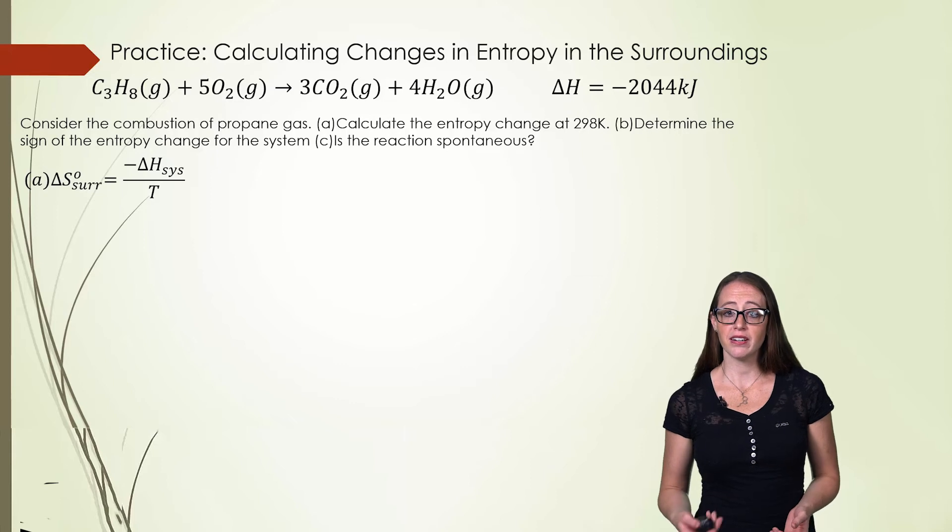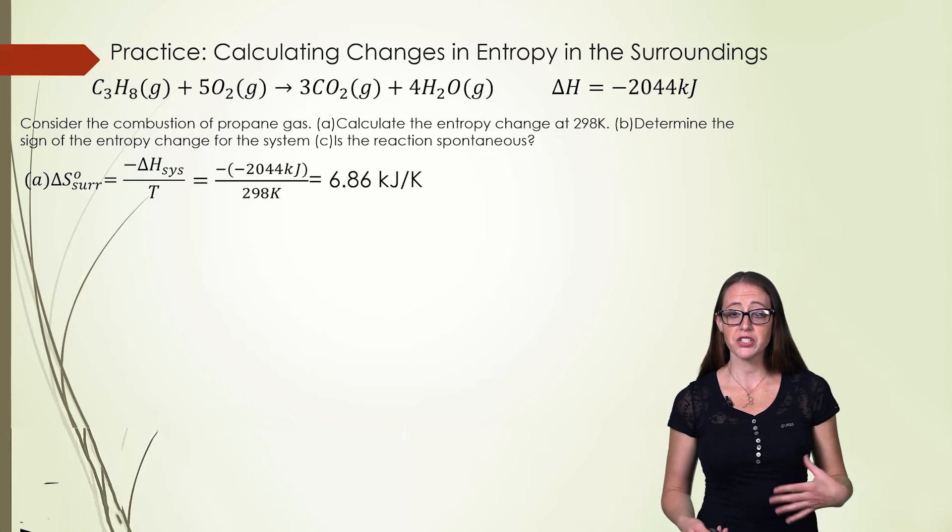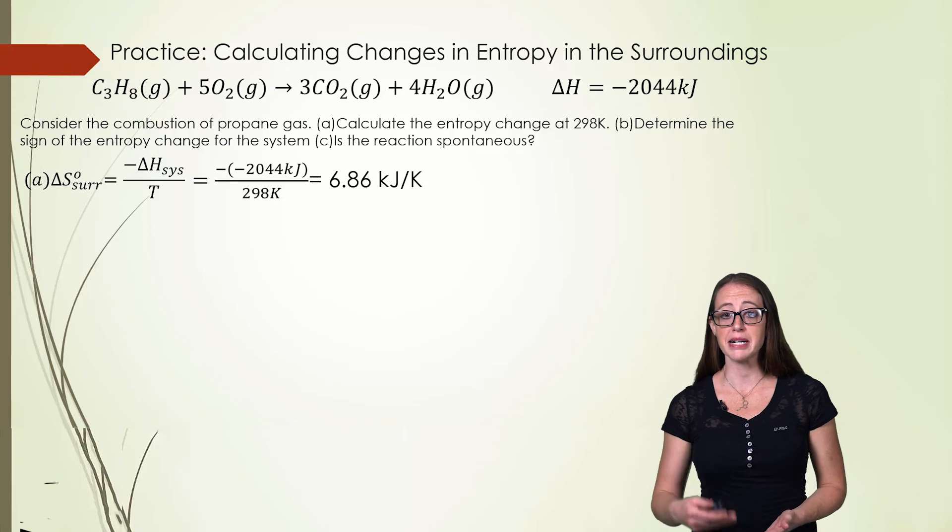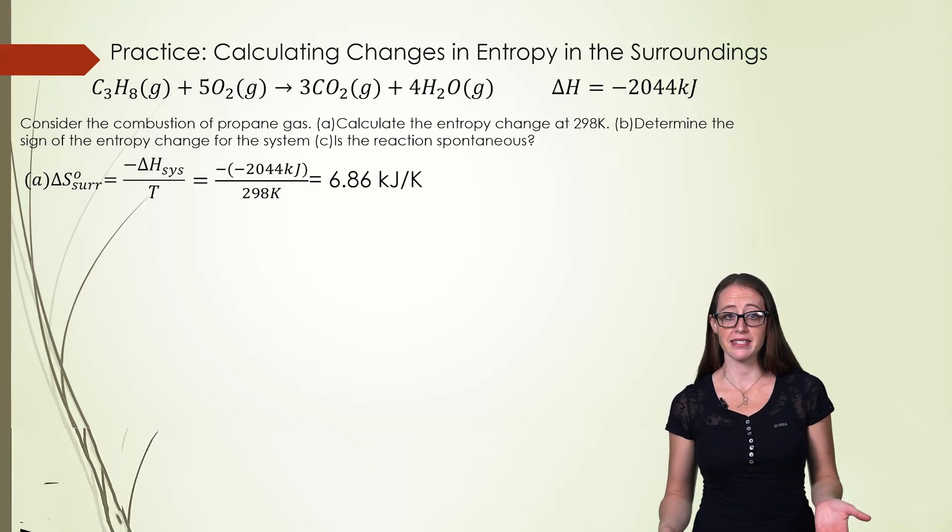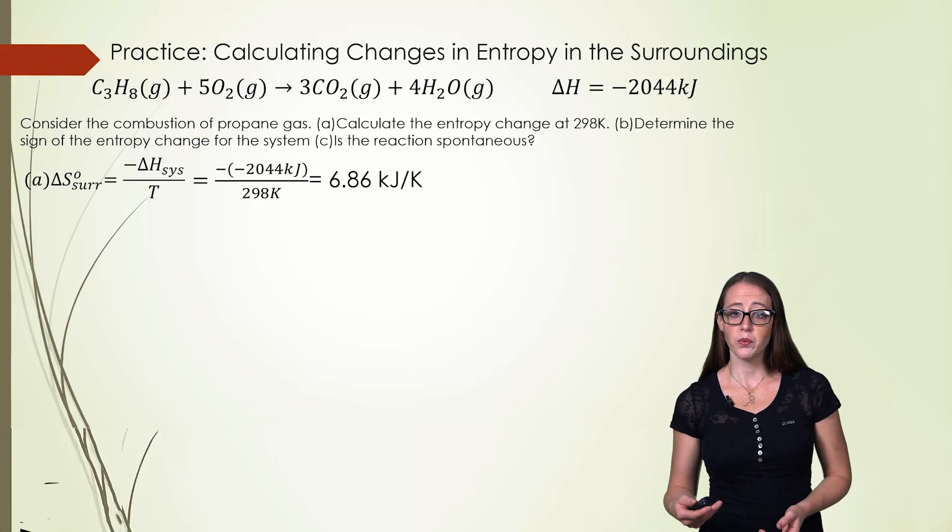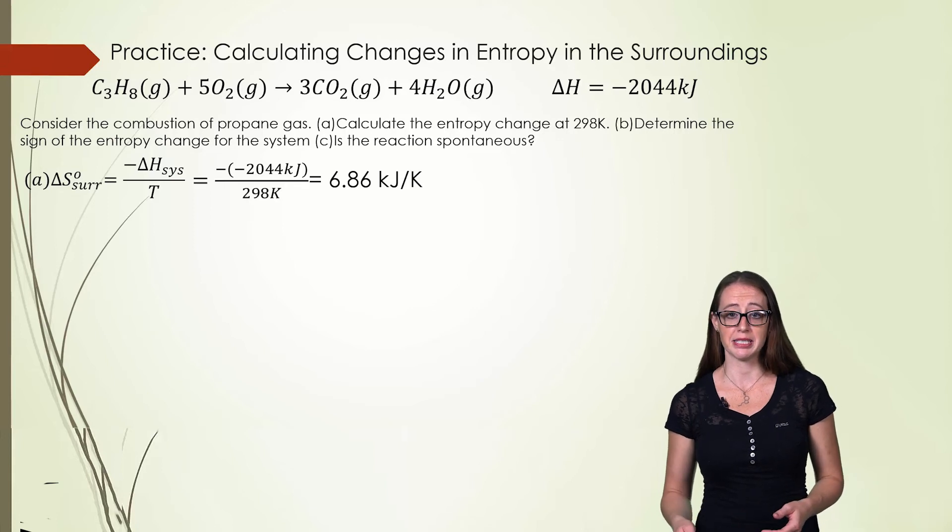We'll fill in our enthalpy and our temperature, making sure that our temperature is in Kelvin. It must be in Kelvin. This gives us an entropy change of 6.86 kilojoules per Kelvin, which we should know is positive and therefore more likely to lead to a spontaneous process.